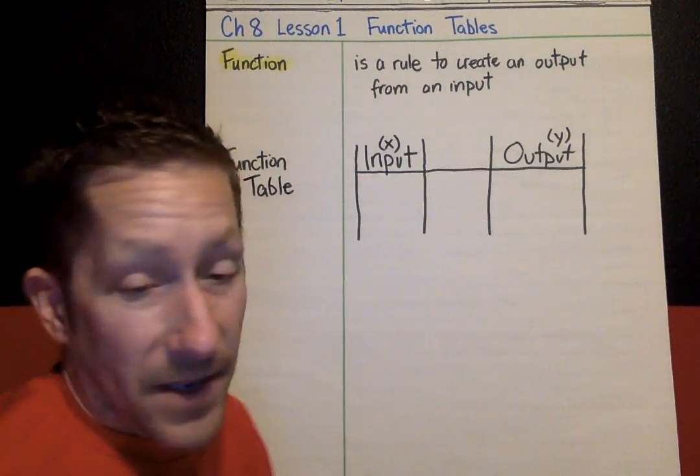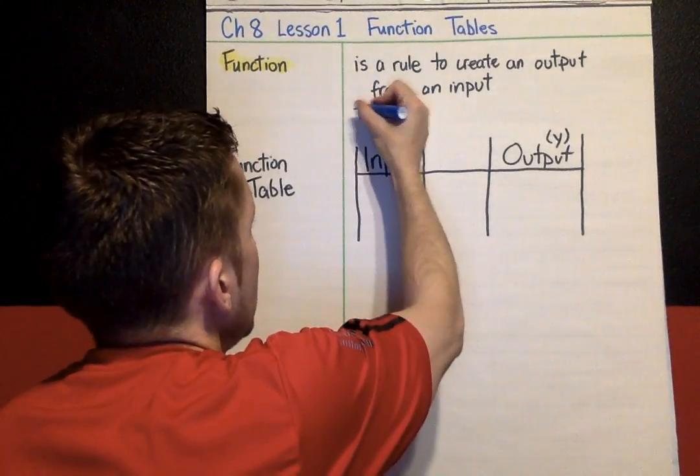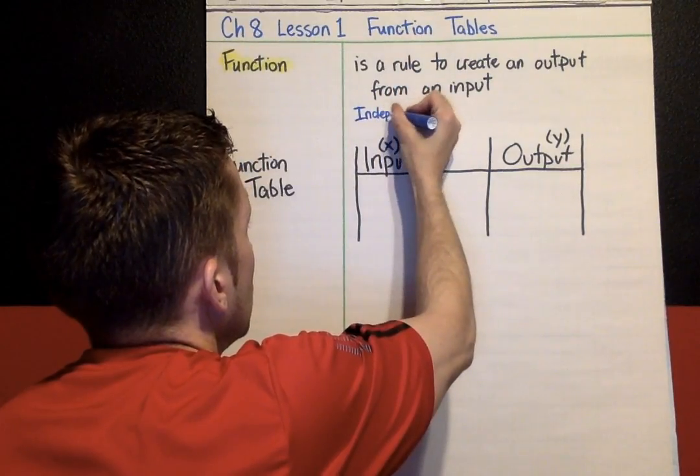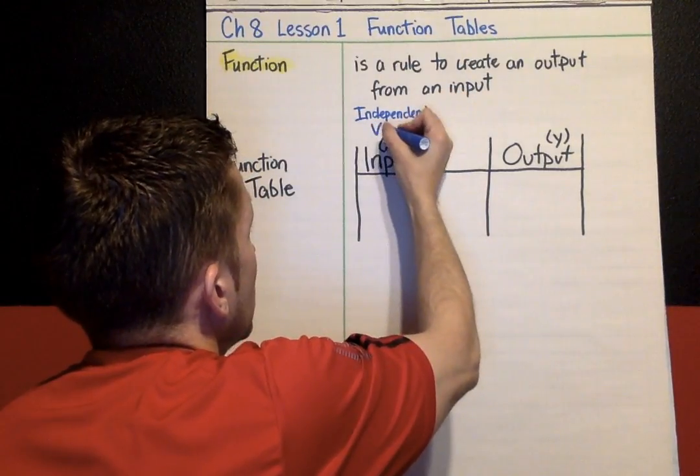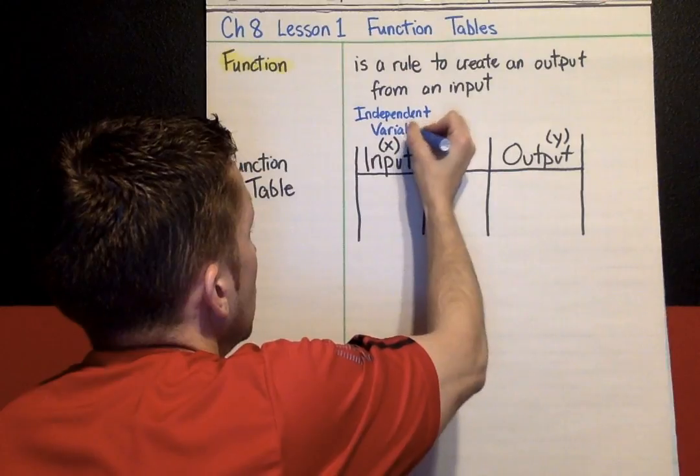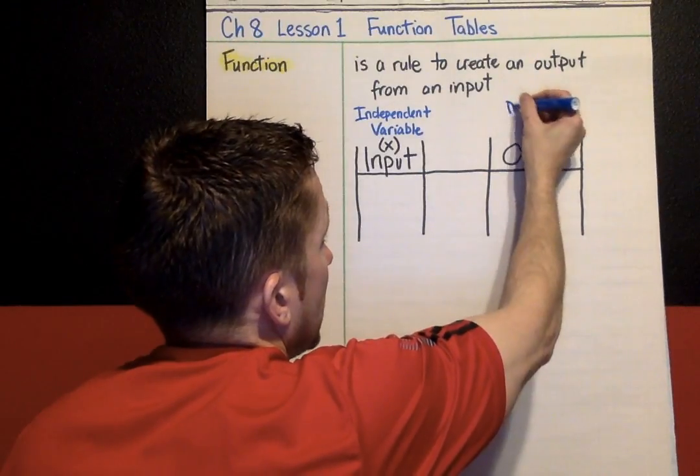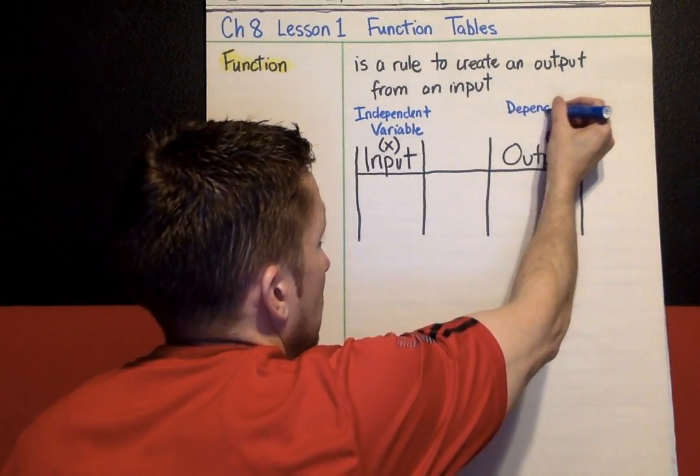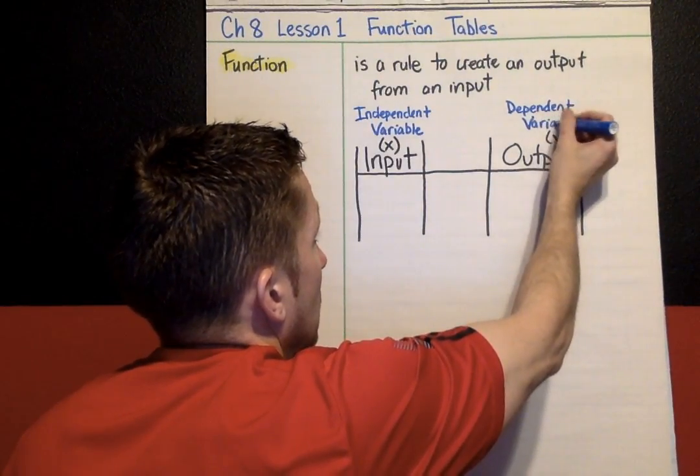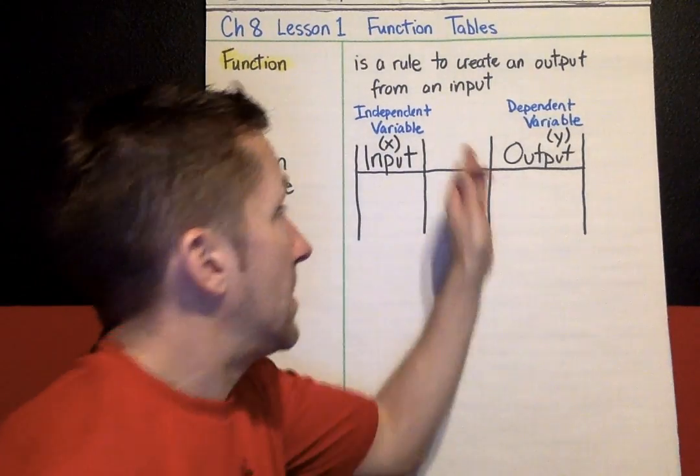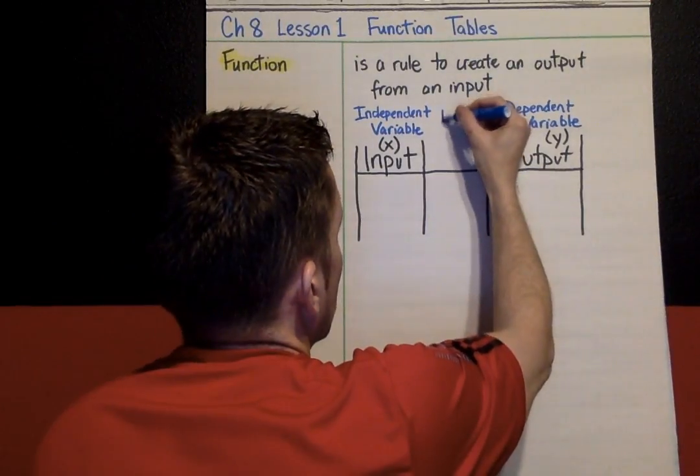The input is also known as the independent variable. I'm going to write independent variable above this. The output, or the y value, is also known as the dependent variable. This thing in the middle right here is where we're going to put the rule, the function rule, right in the middle.